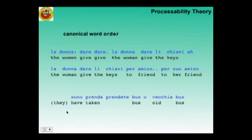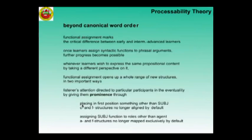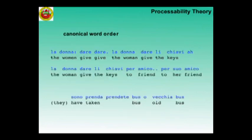Thanks to the very predictability of canonical word order, you do not really need to assign functions to your words. You can go straight at this stage from the A structure to the C structure without going via the F structure. On the other hand, we call it SVO, so by calling it SVO we give functional labels to canonical order — there's a bit of a tangle there.